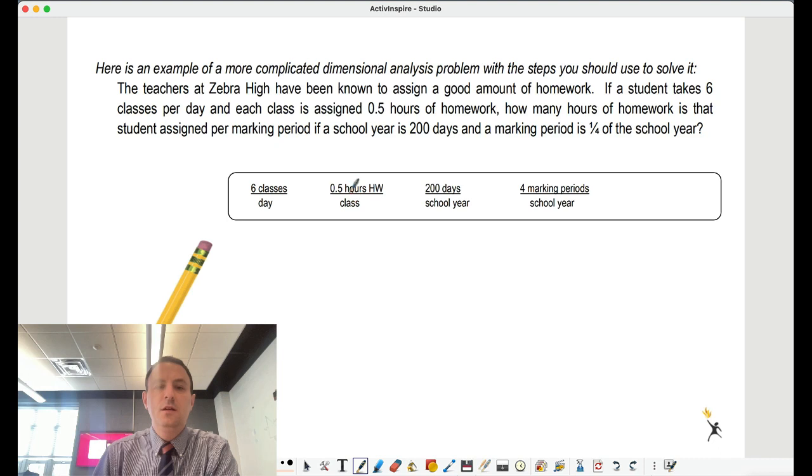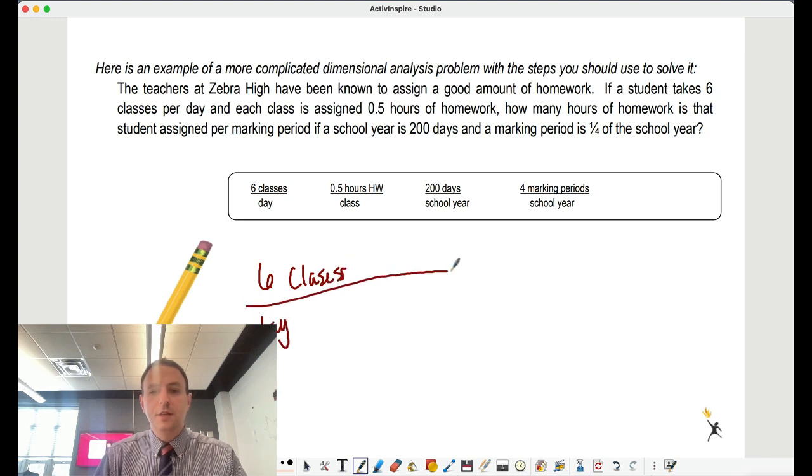These are all the conversion factors I know. Six classes in one day, half an hour of homework per class, 200 days in our school year, and four marking periods per school year. So if we stop and look that around, if our goal is to cross things out, we have six classes a day. So we want to find out how many hours of homework is assigned per marking period.